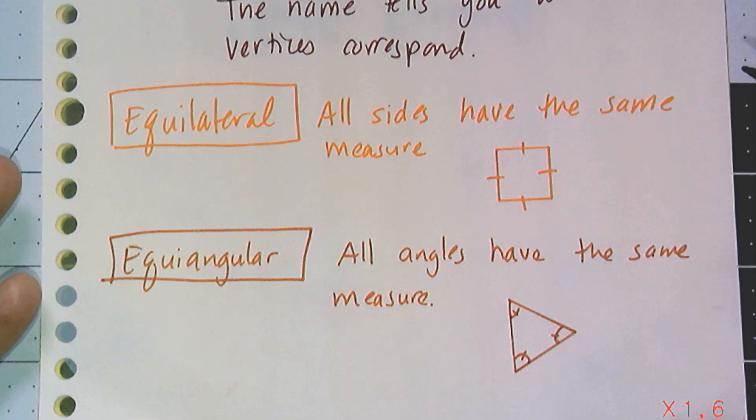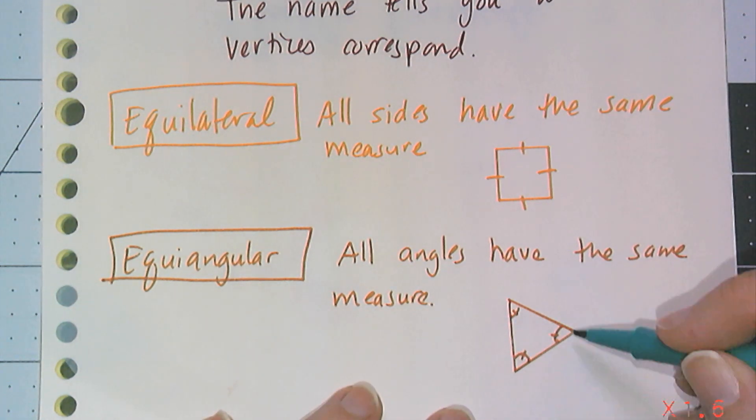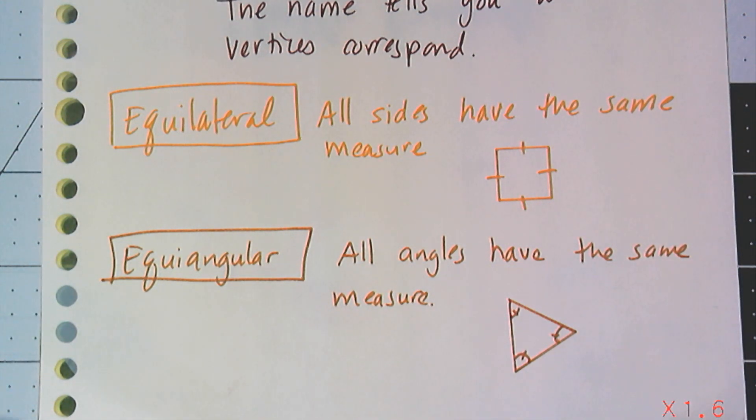I can also have polygons that are equiangular, meaning all of the angles have the same measure. I can draw my polygon and mark each of the angles. In this case, I used one tick mark per angle to show that they are equiangular.